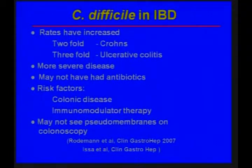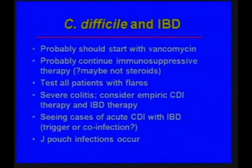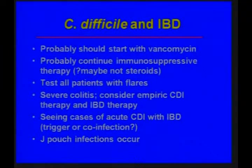For those doing endoscopy, you might not see the pseudomembranes — they might not be there. In these patients, we probably should start with vancomycin therapy and continue the immunosuppressive therapy, but maybe not increase it until the C. difficile is controlled. However, we should probably consider stopping steroids. Any patient with an IBD flare now has to be tested for C. difficile. If there's severe colitis and you don't know if it's IBD or C. difficile, consider treating for both at the same time. We're also seeing more cases of acute IBD occurring with C. difficile, and it's possible that C. diff is triggering inflammatory bowel disease that becomes more chronic.